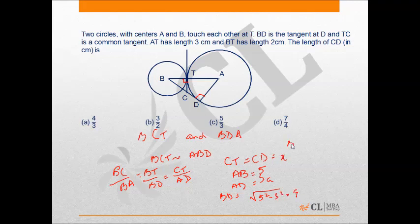Thus, I can say BC is equal to 4 minus X. Now, substituting these values in the equation that we had found from the similar triangles, we find that 4 minus X which is the length of BC upon BA which is 5 is equal to BT which is 2 upon BD. BD we found out was 4 which is equal to CT which was X upon AD and AD we know is 3.